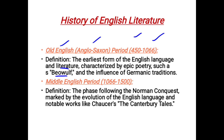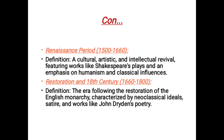The second period is the Middle English period, and it started from 1066 to 1500. Its definition is the phase following the Norman conquest. The Norman people marked the evolution of the English language, and notable works include Chaucer's Canterbury Tales, which is the most important work of that time.